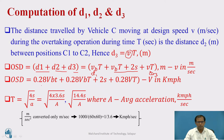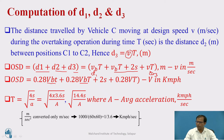In KMPH form, OSD equals 0.28·VB·t (D1) plus 0.28·VB·T plus 2S (D2) plus 0.28·V·T (D3), where small t is the reaction time and capital T is the overtaking time.